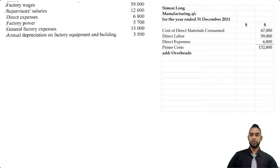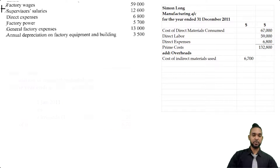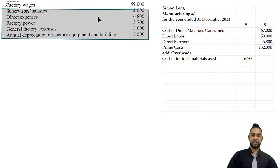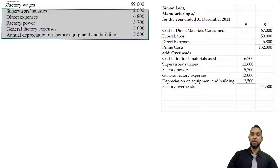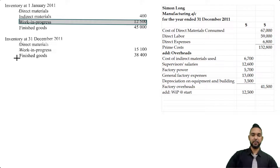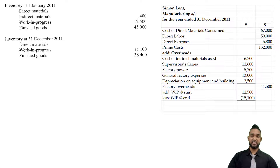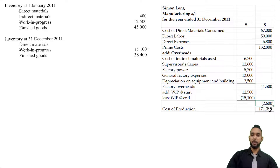To prime cost we add the overheads. First we put in indirect materials used of $6,700 from the previous part. Everything else highlighted — with the exception of direct expenses — goes in the overhead section: supervisor salaries, factory power, general factory expenses, and annual depreciation on factory equipment and building, totaling $41,500. Then we deal with work in progress: opening stock of $12,500 is added and closing stock of $15,100 is subtracted, giving a net adjustment of $2,600 subtracted. Adding prime costs and factory overheads, then subtracting the net WIP adjustment, we get cost of production — or cost of goods manufactured — of $171,700.